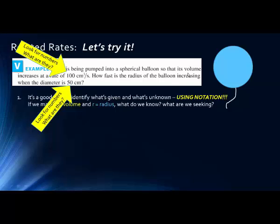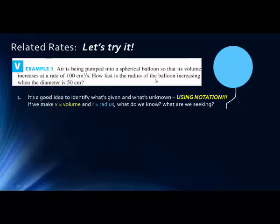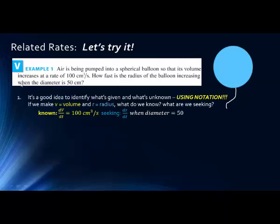In this problem we have two numbers. The volume increases at a rate of 100 cubic centimeters per second — this is a change over time, so it's dV/dt = 100. We're looking for how fast the radius is increasing, which is dr/dt, when the diameter is 50. Since diameter equals twice the radius, we convert: r = 25 centimeters.